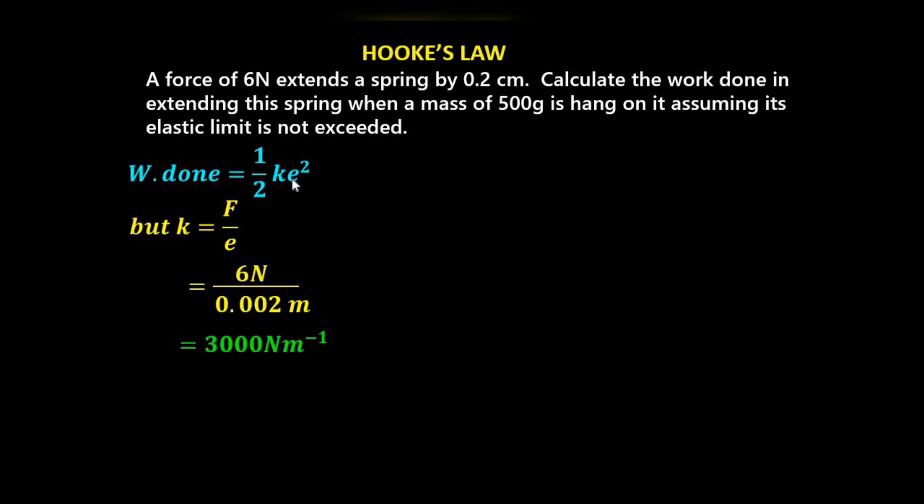The next thing is to determine the extension by the mass 500 grams. Now again, by Hooke's law, extension is force over spring constant. So force as a result of 500 grams is 5 newtons. Remember, 500 grams into kilograms is 0.5—we divide by 1000 since 1000 grams is 1 kilogram. So we'll have the force there as 0.5 times 10. Remember, 10 is the gravitational field strength. And then we divide it by the spring constant, which is 3000. And this should give us 1 over 600 meters.